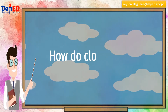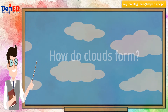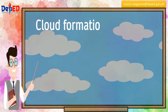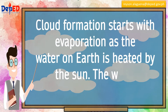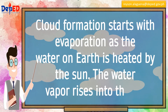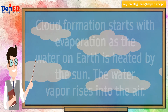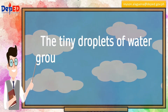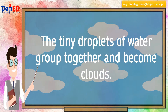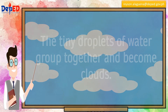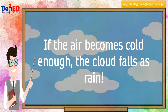How do clouds form? Cloud formation starts with evaporation as the water on Earth is heated by the sun. The water vapor rises into the air. The tiny droplets of water group together and become clouds. If the air becomes cold enough, the cloud falls as rain.